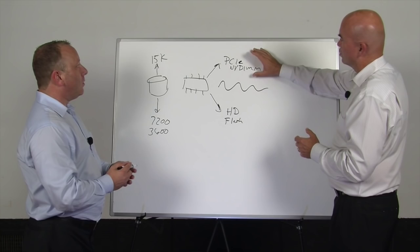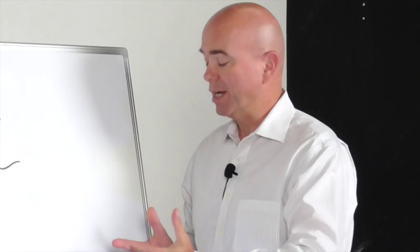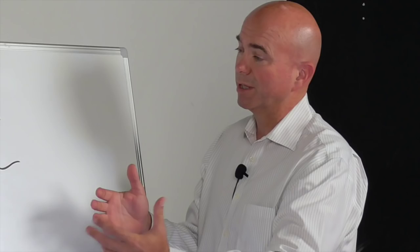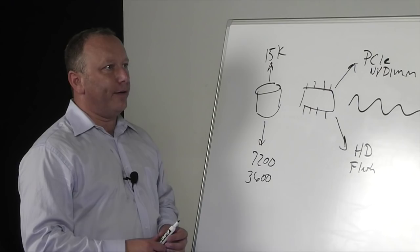So in this world, the NVDIMS sort of acts as a shock absorber to the high density flash. Who knew that we'd have to actually mask flash latencies? And so then the overall idea here is leveraging the intelligence you already have that does this automation over here, and use it in the flash world as well.